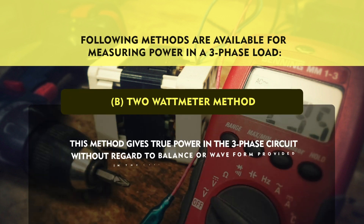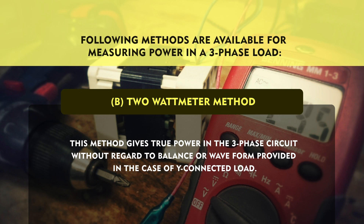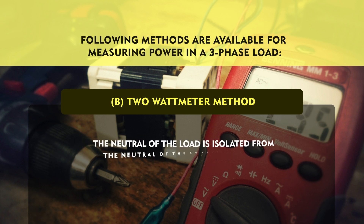The second method for power measurement in a three-phase circuit is the 2-wattmeter method. This method gives true power in the three-phase circuit without regard to balance or waveform, provided in case of a star-connected load, the neutral of the load is isolated from the neutral of the source, or if there is a neutral connection, the neutral wire should not carry any current. This is possible only if the load is preferably balanced and there are no harmonics present of the triple frequency or any other multiple of that frequency.